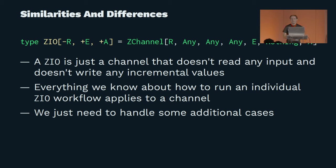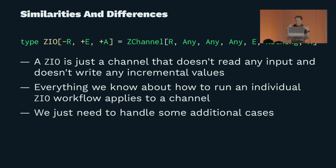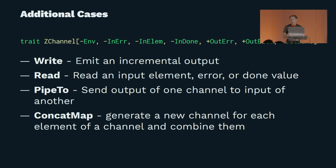Once we establish that, we can quickly get to: everything I know about how to run a ZEO workflow applies to running a channel. The only additional thing I need to do is handle the additional cases of a channel that reflect its additional capabilities. And it turns out there are actually only a few of them. Looking at the channel type signature and its type parameters, we actually only need four additional constructors.